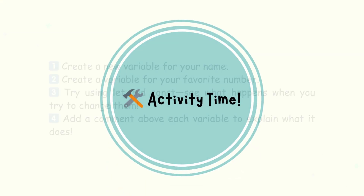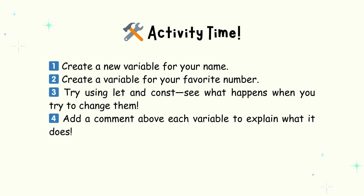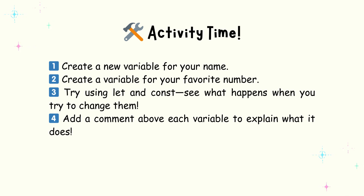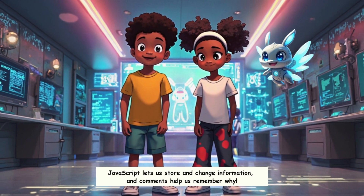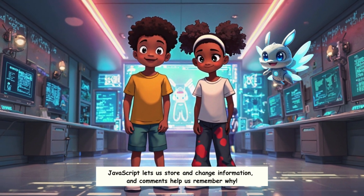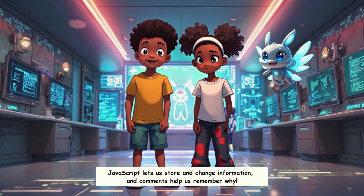Activity time! First, create a new variable for your name. Second, create a variable for your favorite number. Third, try using let and const — see what happens when you try to change them. Fourth, add a comment above each variable to explain what it does. JavaScript lets us store and change information, and comments help us remember why.